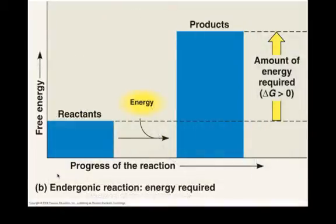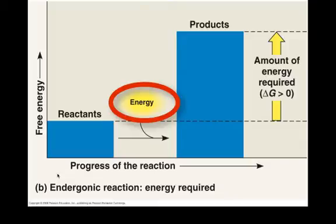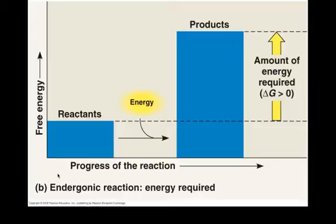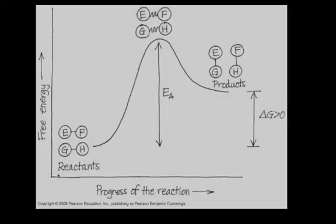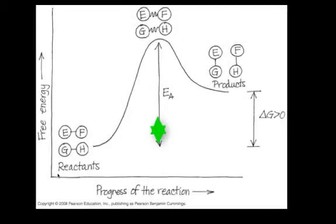The opposite is true for an endergonic reaction. Free energy must be continually put into the system and into the reactants to drive the reaction forward. The products absorb that energy and store it as chemical potential energy in the bonds formed by the products. Endergonic reactions have an activation energy too, as depicted by this graphic.